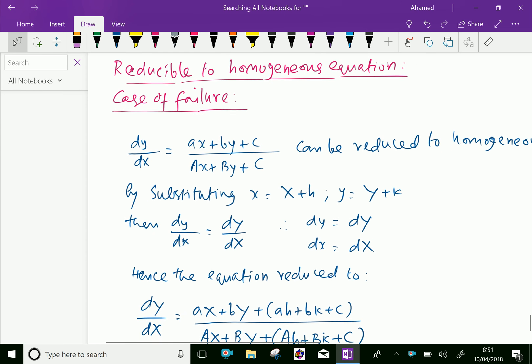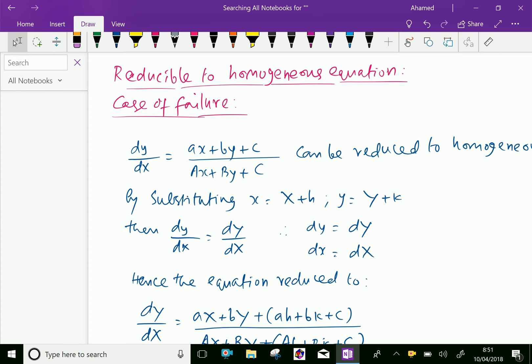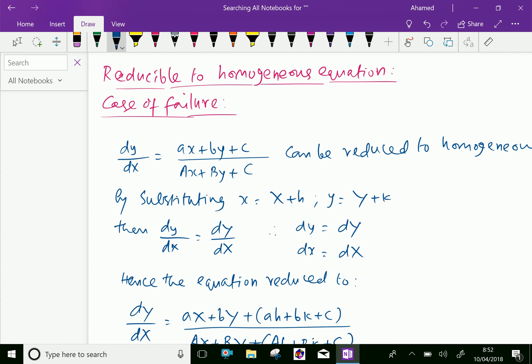Suppose dy/dx equals (ax + by + c) over (Ax + By + C) can be reduced to homogeneous by substituting x equals X + h, y equals Y + k, then dy/dx equals dY/dX. Therefore, we can say dy equals dY and dx equals dX.